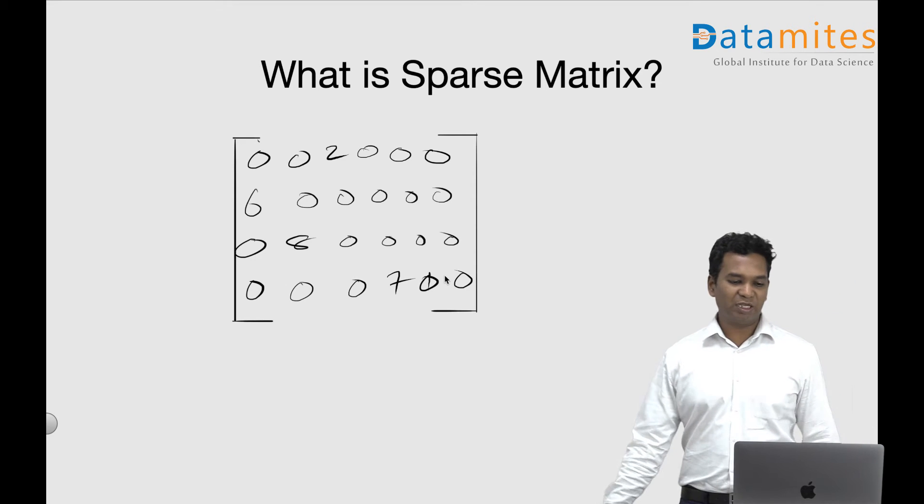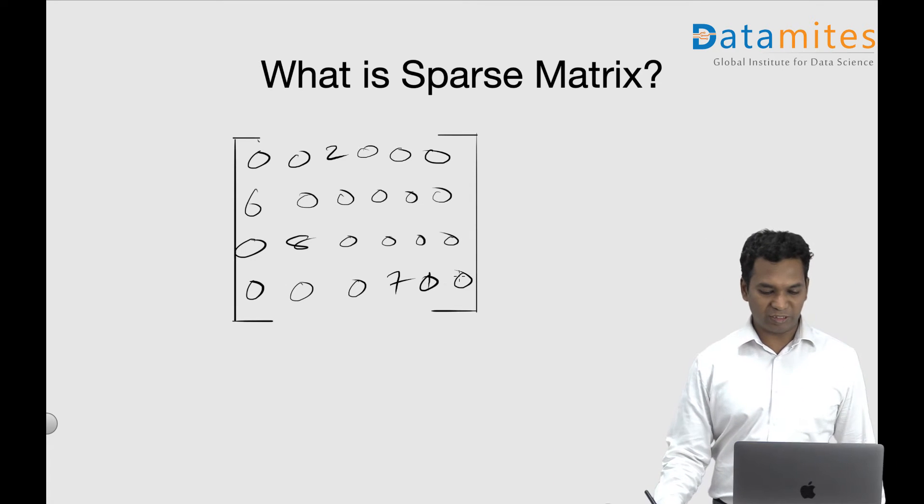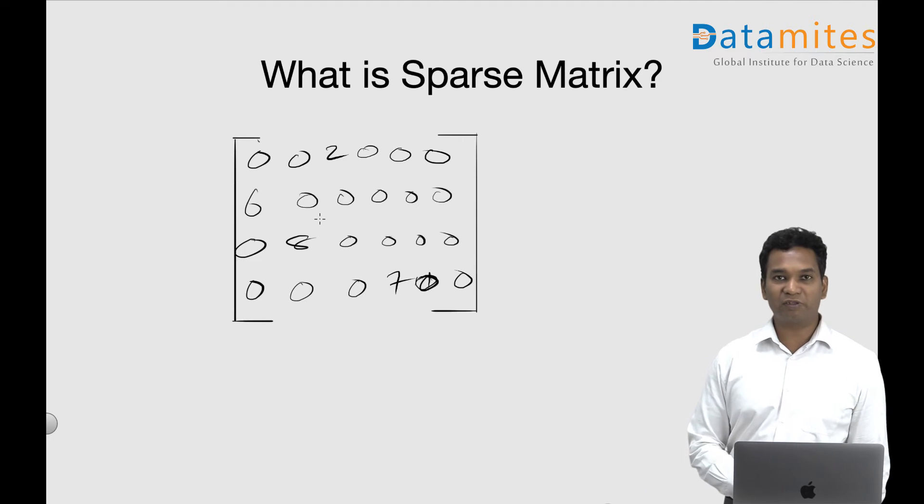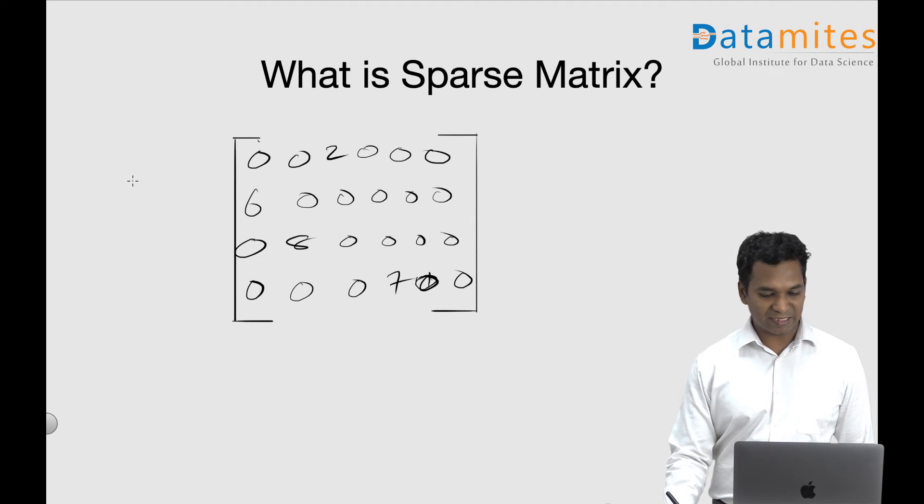A huge sparse matrix, but the number of elements are really really small. So in this case we have four rows and six columns for example, and the number of elements you have is only four. But when you look at the matrix size, it's actually four cross six, so the matrix has 24 elements but 20 elements are actually zeros.